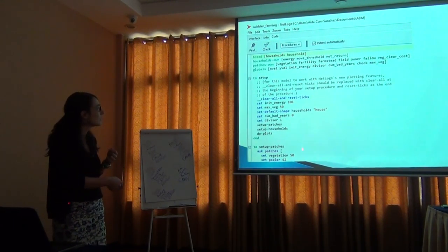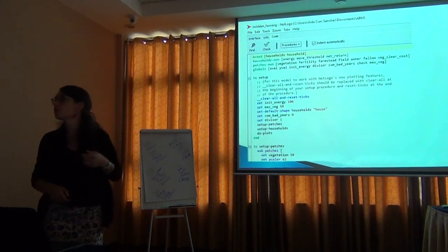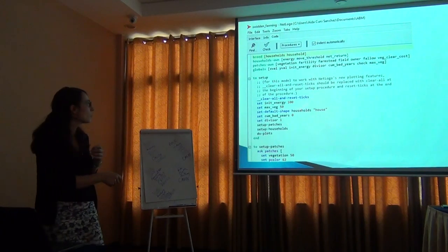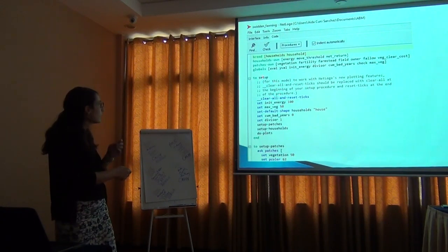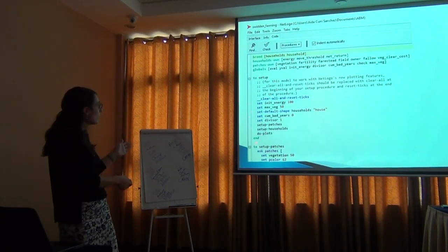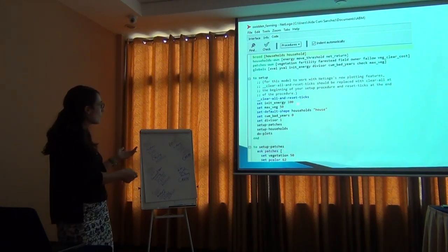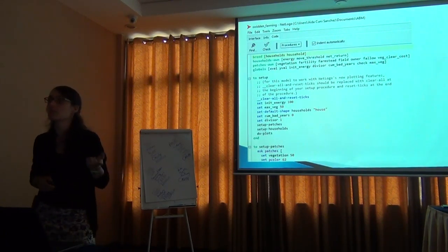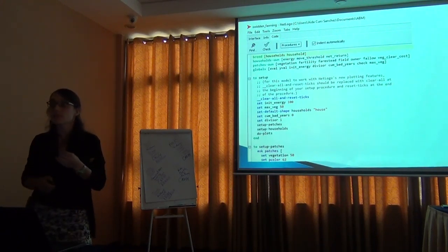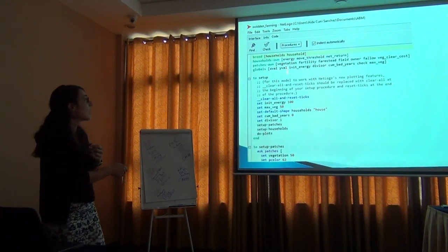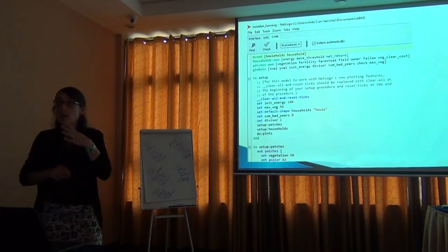The first time I opened a code tab, it looked like Chinese to me — I couldn't make any sense of it, just colors and lines on the right and left. But really, after maybe a month, I was starting to make sense of things. Maybe I couldn't write my own code, but at least I could understand that 'setup' means to start the model, and 'patches' are the cells in the background — a bit like a raster.